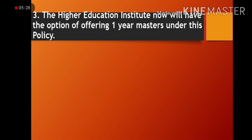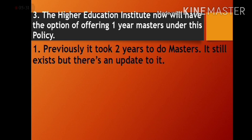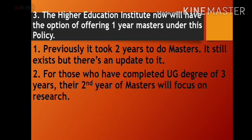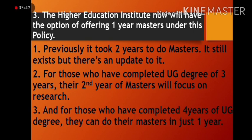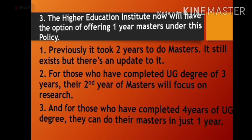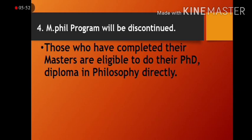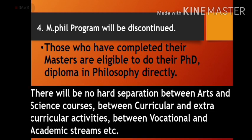Higher education institutes will now have the option of offering a one-year master's program. Previously it took two years, which is still available, but there is an update: those who completed a three-year undergraduate degree will have their second year of master's focused on research, while those who completed a four-year degree can finish their master's in just one year. The government also plans to discontinue the MPhil program, and those who complete their master's will be eligible to pursue a PhD directly.